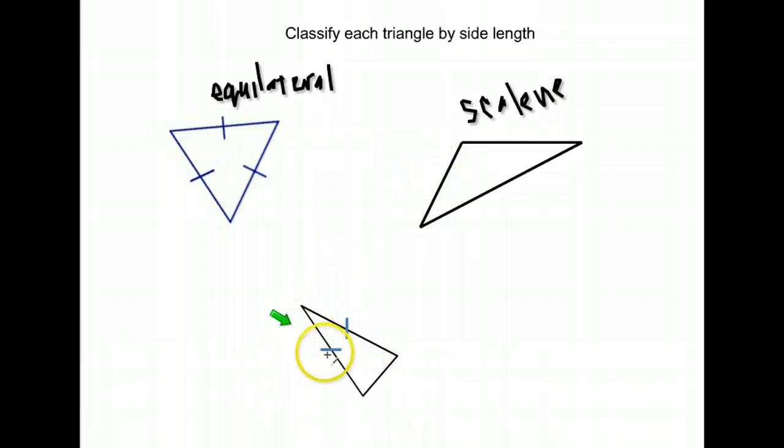And finally down here, notice we have one, two sides marked the same length. What type of triangle has two sides the same length? That's an isosceles.